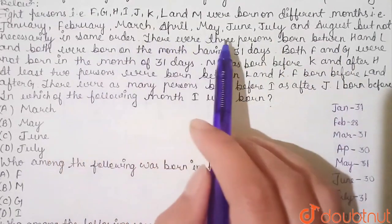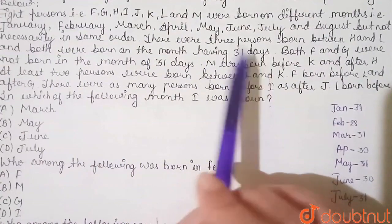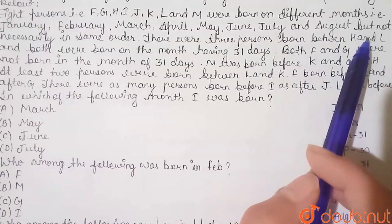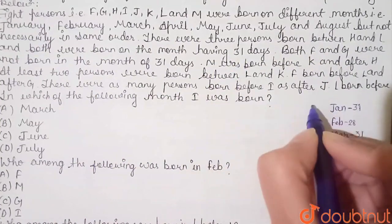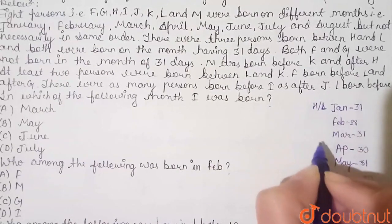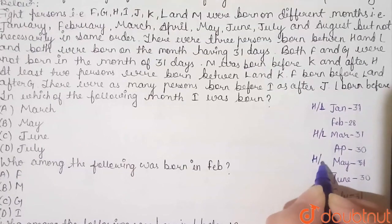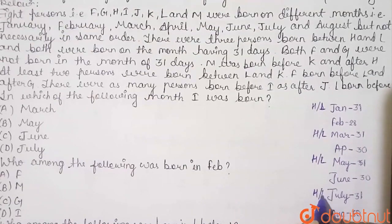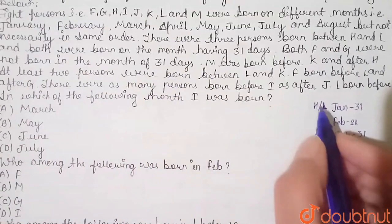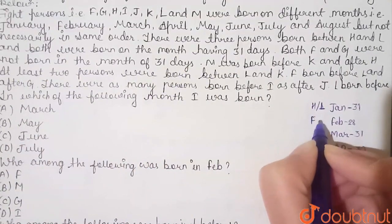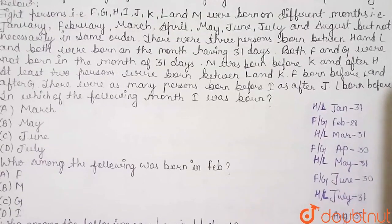There were 3 persons born between H and L, and both were born in a month having 31 days. So H and L were born in January, March, May, July, or August. Both F and G were not born in a month of 31 days — so F and G were born either in February, April, or June, which have 28 or 30 days.